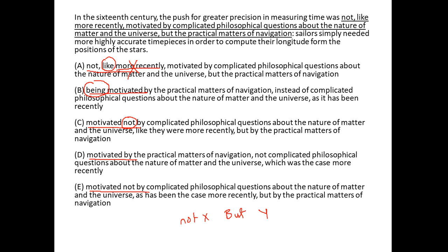Now let's search for 'like' in option B. If you go towards the end, we have 'as it has been recently.' As is used to compare actions, so 'as' must be followed by a clause or a verb. But here 'it' does not refer to anything — if you go back and put all the singular nouns in place of 'it,' none of them make sense. So 'it' does not have any antecedent. And also we have 'being' in option B, which is highly avoidable. So we can eliminate B.